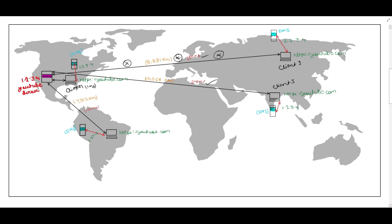Now let's see how long the Brazil client is taking. Client four from Brazil types youtube.com, goes to the Brazil DNS server, which returns 1.2.3.4, and client four connects to the YouTube server. For the Brazil client it is taking 150 milliseconds — also quite large — because the distance is 7,312 km.